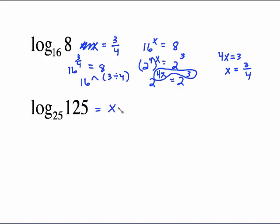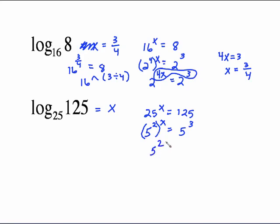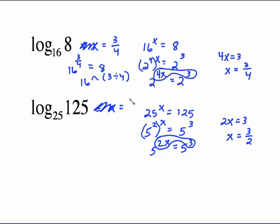Same kind of setup: put equals x, go to exponential — 25 to the x equals 125. The common base is 5. 125 is 5 cubed; 25 is 5 squared raised to the x. Exponent law gives 5 to the 2x equals 5 to the third. Equal bases, equal exponents: 2x equals 3, divide by 2, and x equals 3 halves. Log base 25 of 125 equals 3 halves.